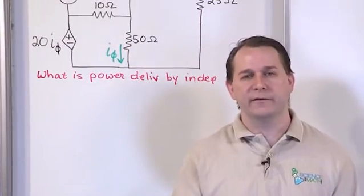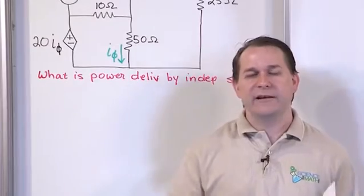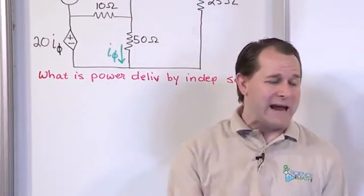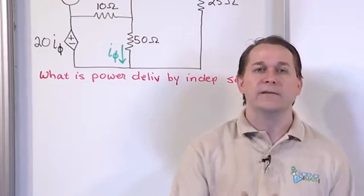when we wrote our node voltage equations down, we didn't have enough equations to solve the problem. So we had to write a constraint equation - an extra equation needed because we have this source that's dependent on something else.